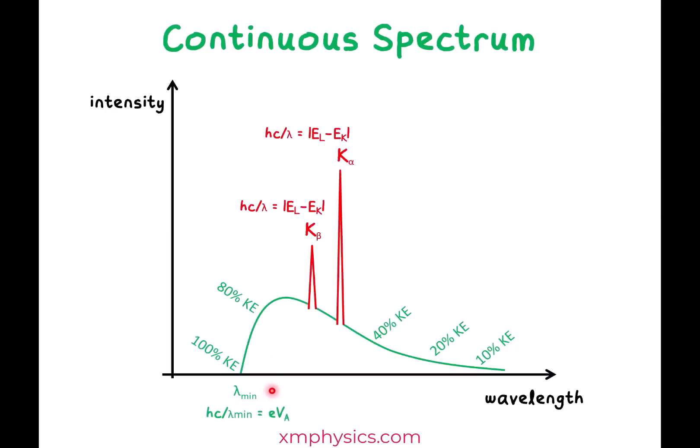And if you're made to calculate the cutoff wavelength, just equate the energy of the photon to the KE provided by the accelerating voltage. Okay, hope you have a good idea of why the X-ray spectrum has both a discrete component and a continuous component.